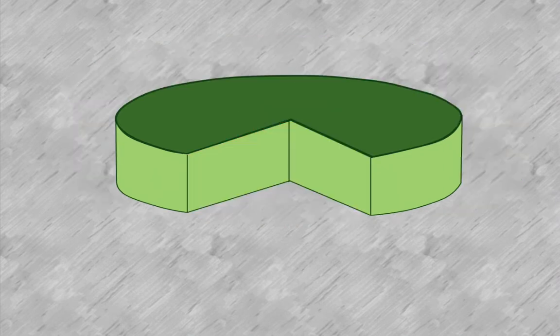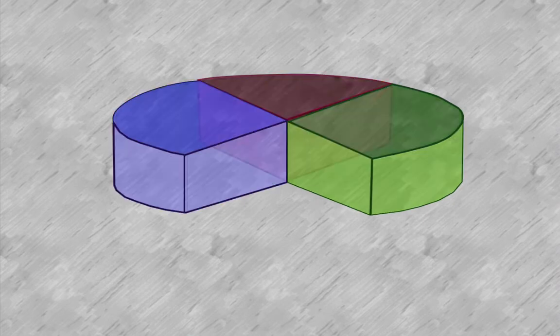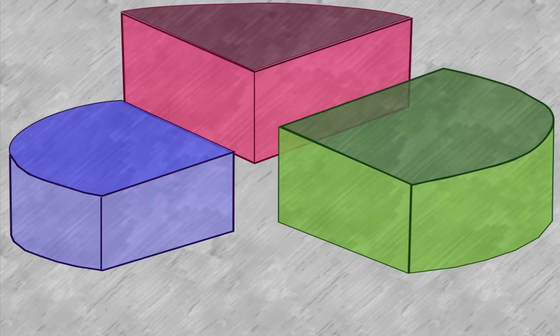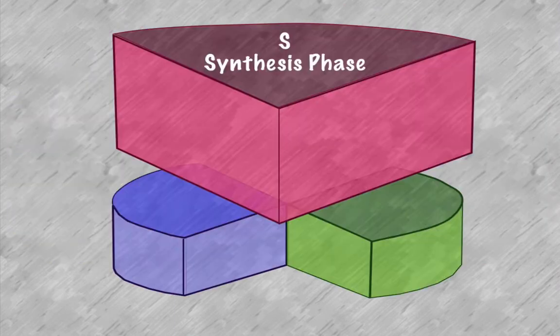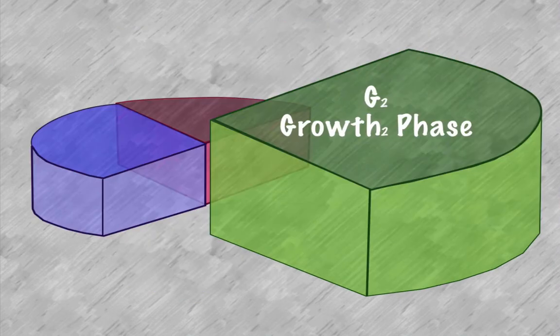Let's highlight this large green cycle first. This is broken down into three different phases. Our first phase is the G1 growth phase, then we have our synthesis phase where DNA is replicated, and then we have our G2 phase, our growth two phase.